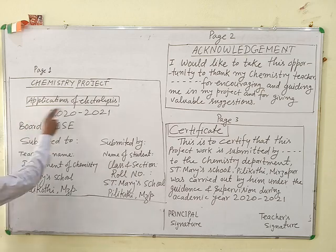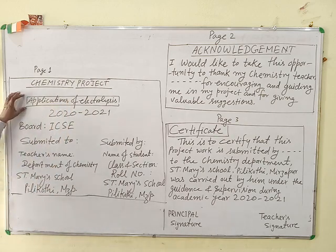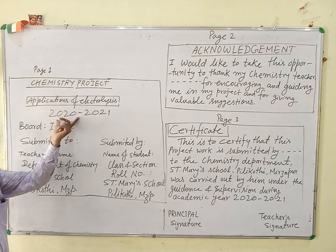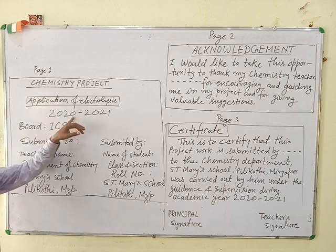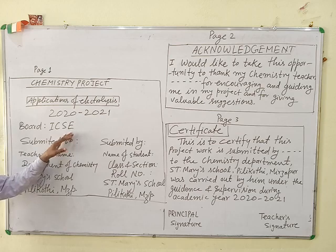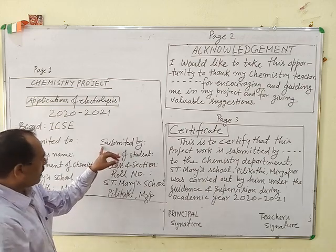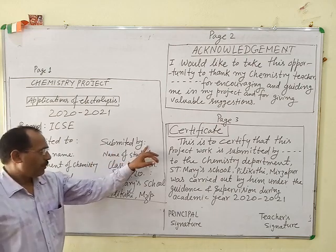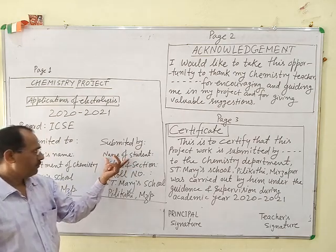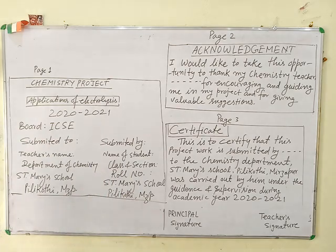For example: applications of electrolysis, chemical bonding, principles of metallurgy — that is, the name of your assignment. Just below write the subject chemistry, below it write the session — for example 2020-2021 — and below that write the board: ICSE. Then write 'Submitted to' with your chemistry teacher's name, department of chemistry and school name. On the right side, write 'Submitted by' with the student's name, class, section, roll number and finally the name of the school. This is your first page.